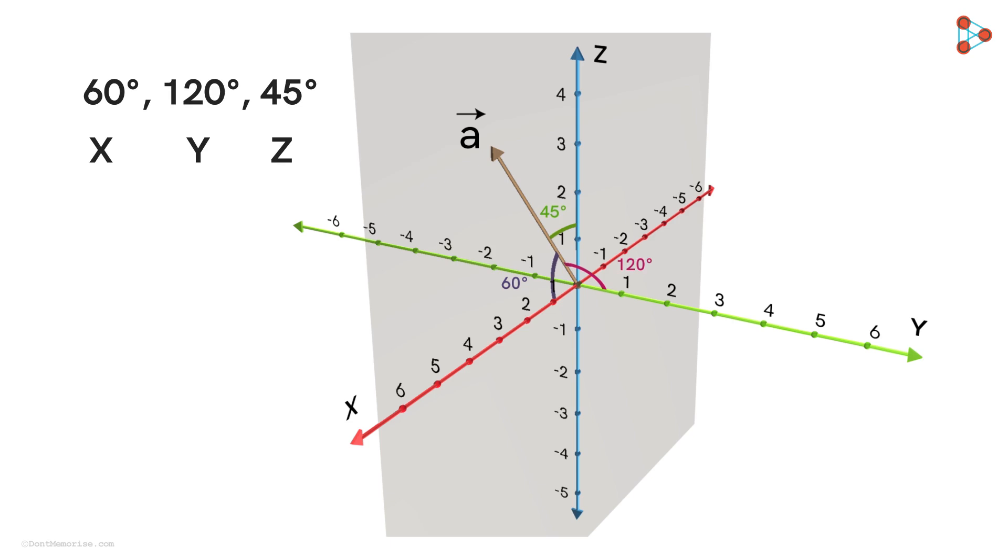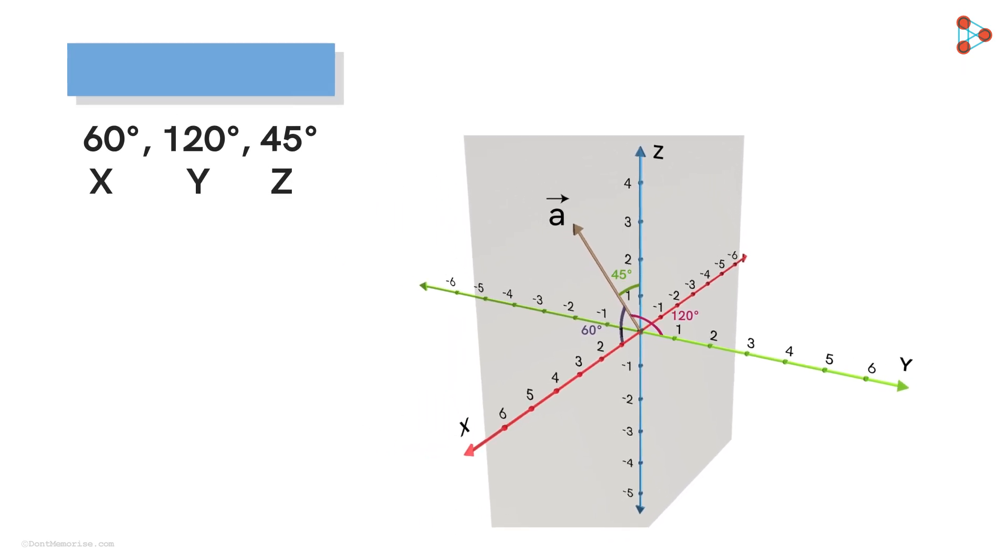We call these three angles made by a vector with positive x, y, and z-axis the direction angles of the vector.